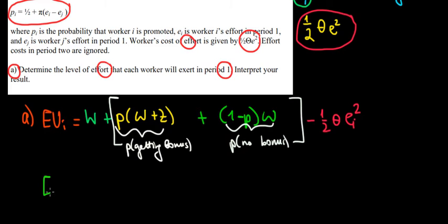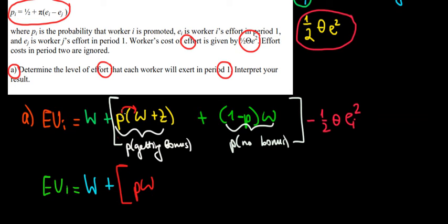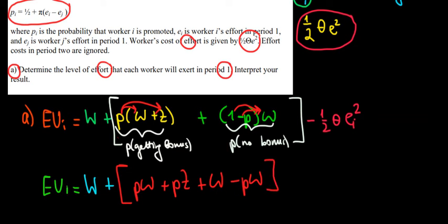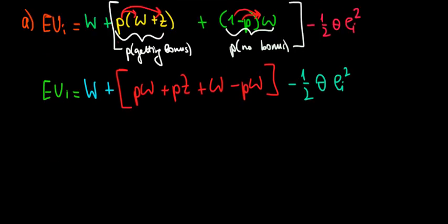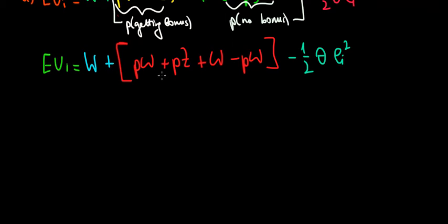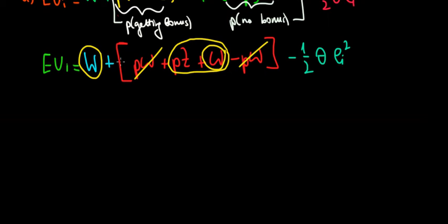Expanding the brackets: we get W plus p times W plus p times Z, then 1 times W minus p times W, minus the cost of effort 1/2 theta e_i squared. The p*W terms cancel out, and the two W terms combine to give 2W, leaving us with 2W plus p times Z minus 1/2 theta e_i squared.